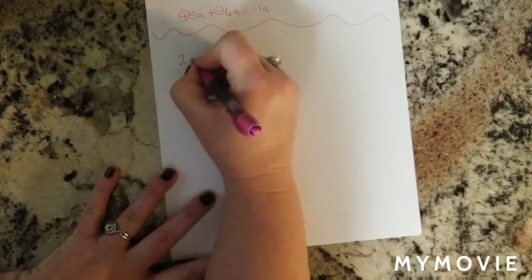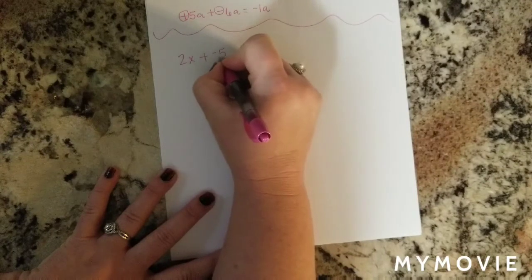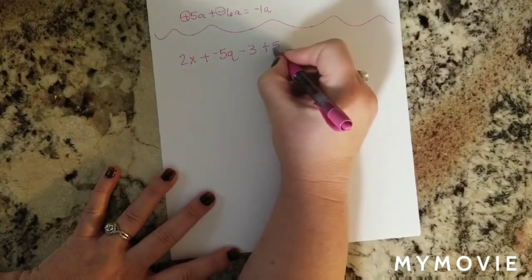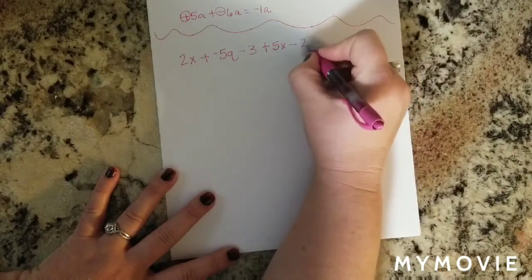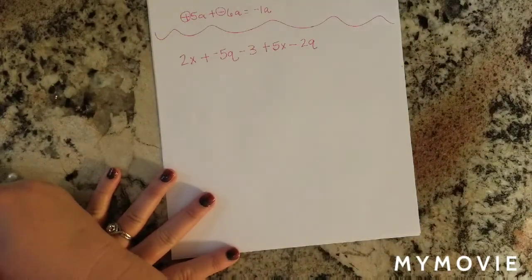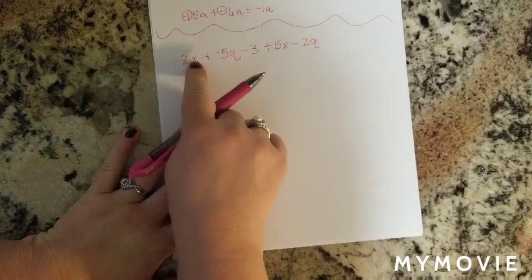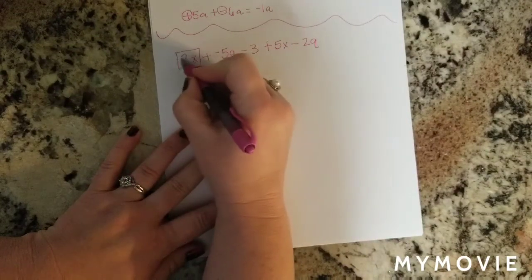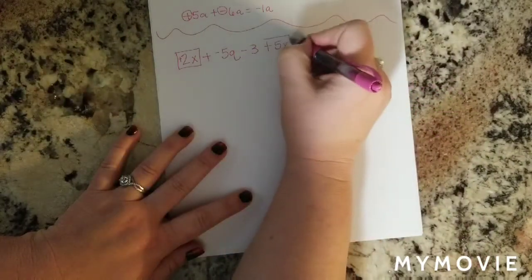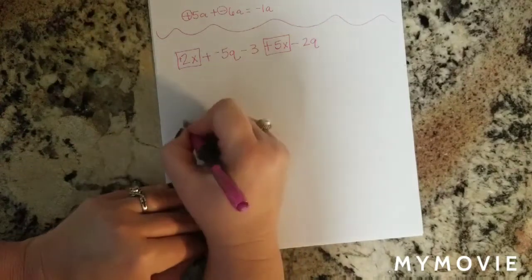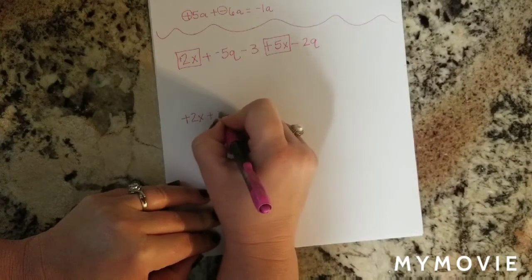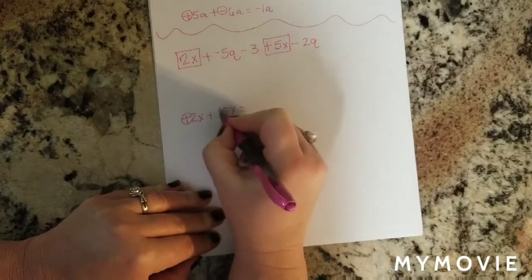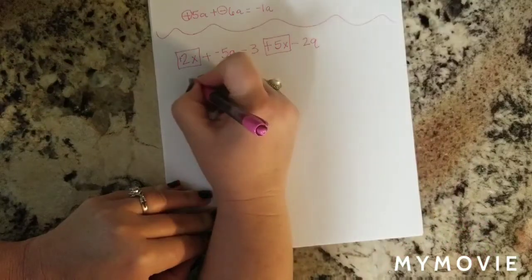Let's try another one. Say we have 2x plus negative 5q minus 3 plus 5x minus 2q. We can simplify by finding like terms. Starting with 2x, I look for any other terms with variable x. I find positive 2x and positive 5x. I check the signs — both positive — so I add and get 7x.